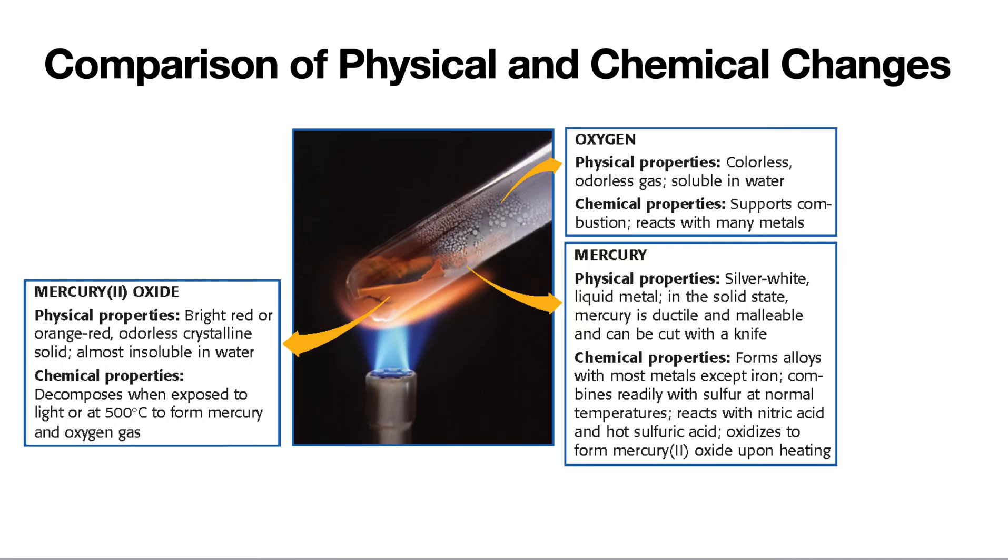The comparison of physical and chemical changes. We see in the mercury oxide that physical properties would be bright red or orange-red, colorless, crystalline solid, almost insoluble in water. Keyword here for a chemical property: decomposes. Very important.